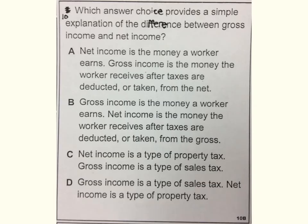Number ten. Which answer choice provides a simple explanation of the difference between gross income and net income? A. Net income is the money a worker earns. Gross income is the money the worker receives after taxes are deducted or taken from the net. B. Gross income is the money a worker earns. Net income is the money the worker receives after taxes are deducted or taken from the gross. C. Net income is a type of property tax. Gross income is a type of sales tax. D. Gross income is a type of sales tax. Net income is a type of property tax.